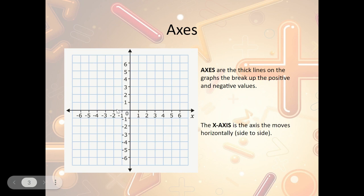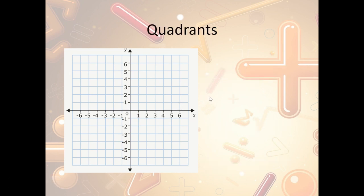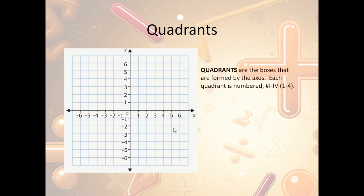The x-axis is the one that goes side to side, and it's usually labeled but sometimes it's not. The y-axis is the vertical axis, the one that goes up and down. From those axes, we form what we call quadrants. Quadrants are the boxes created from the axes. We label them I through IV, or one through four. Quadrant one is where we begin, and then we go counterclockwise to create the other boxes — quadrant two, quadrant three, and quadrant four.